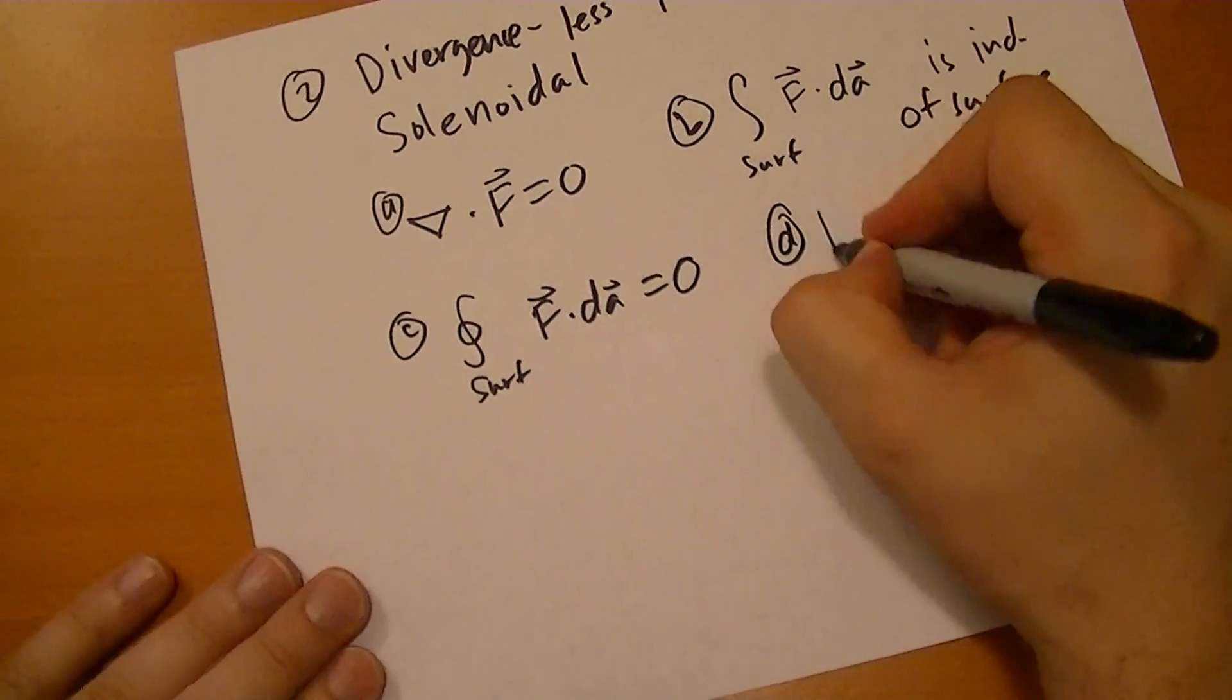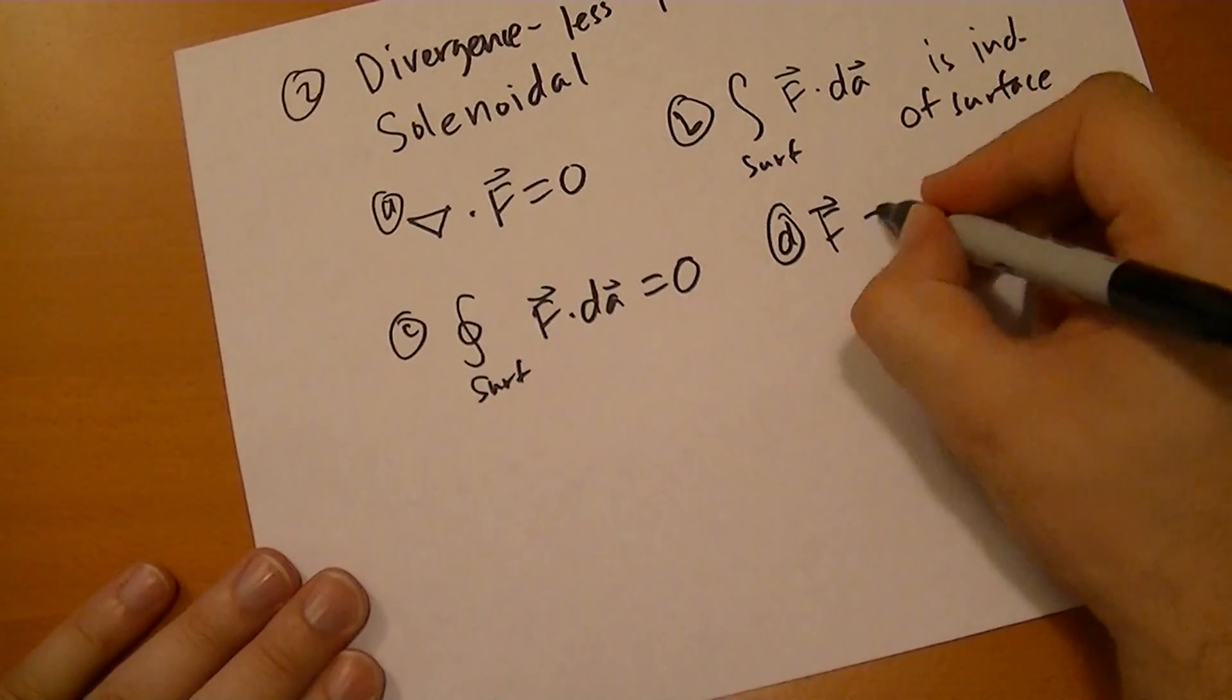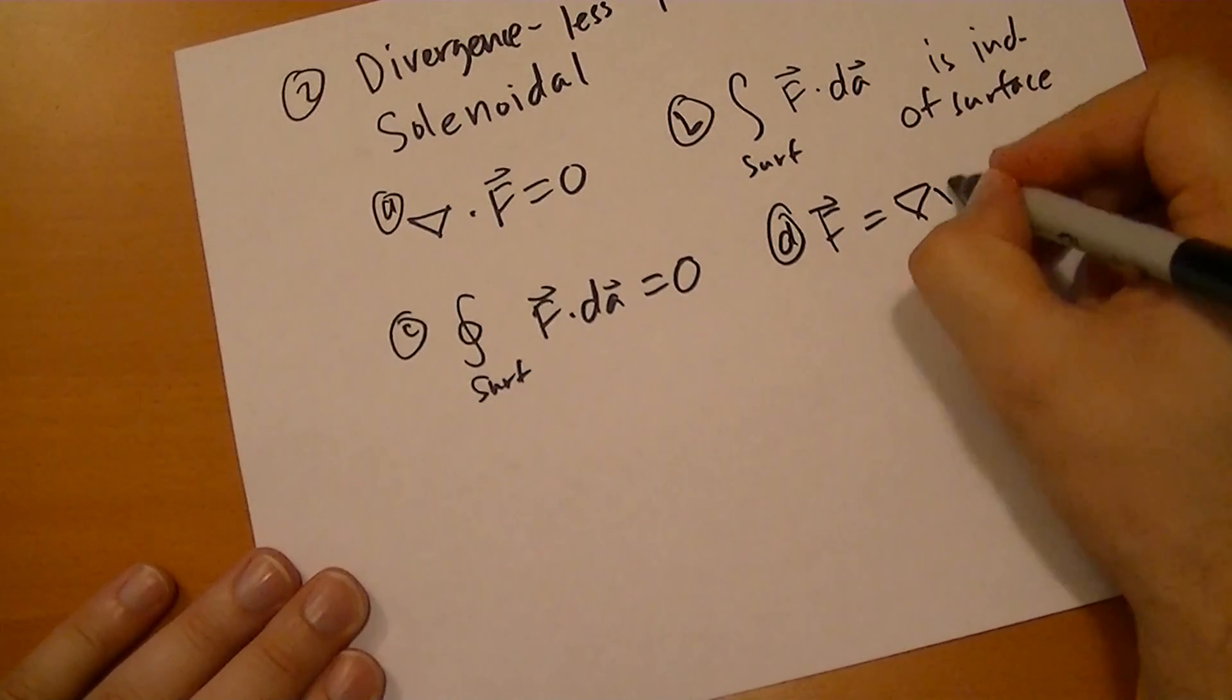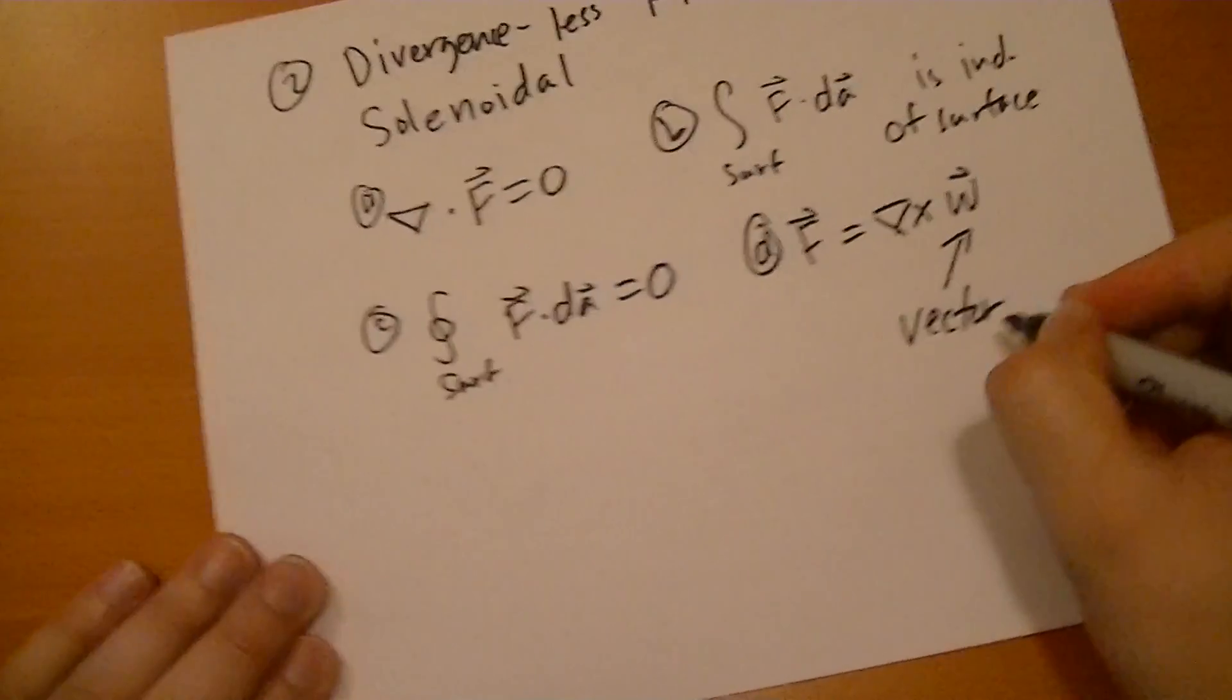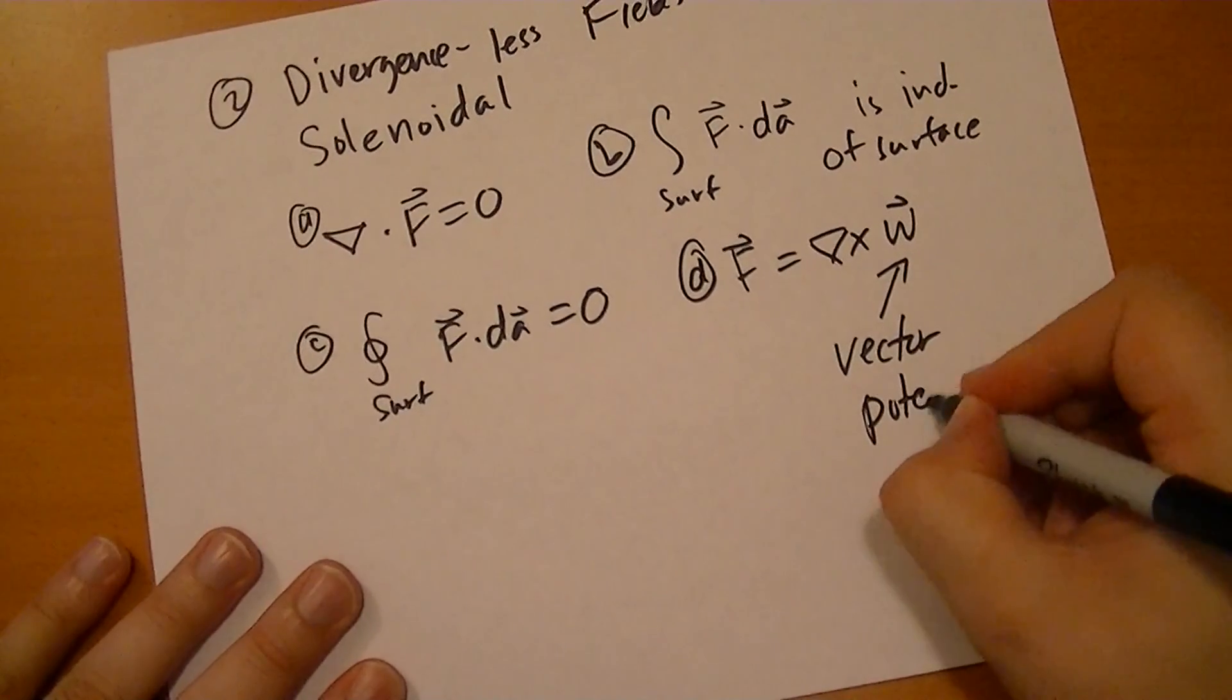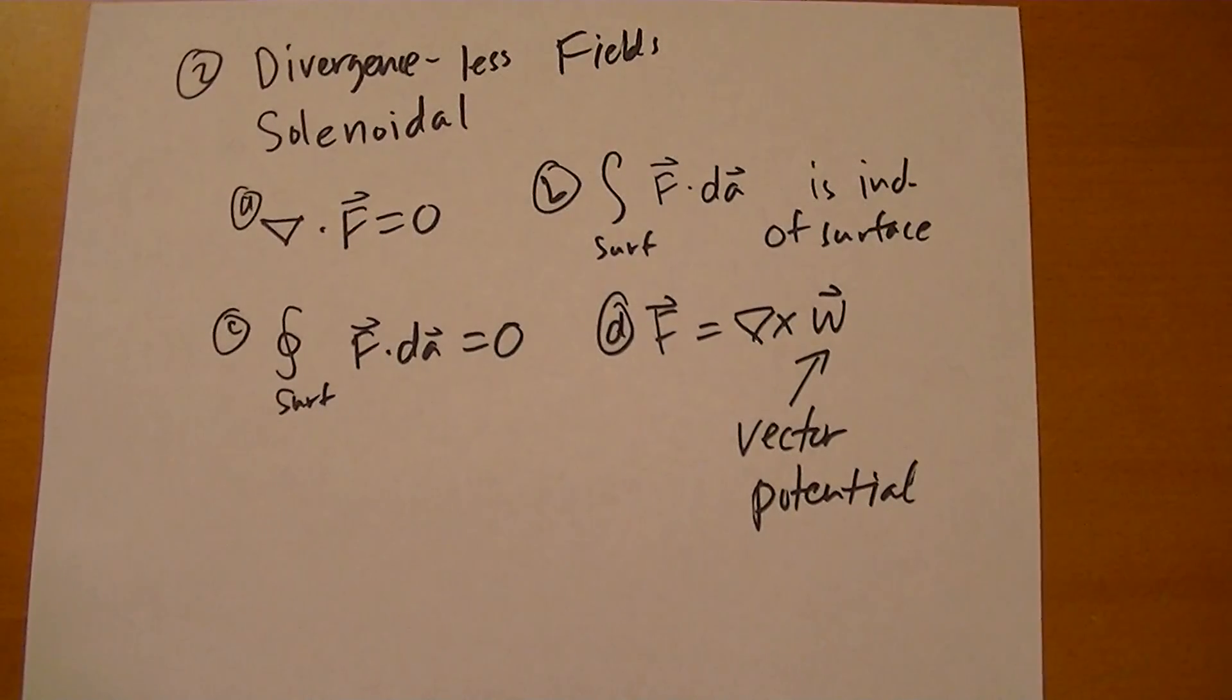And the last is that F is the curl of some vector potential. And all of these statements go hand in hand. If any one of them is true, then all of them are true.